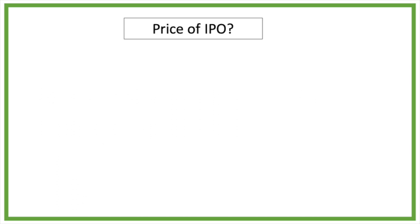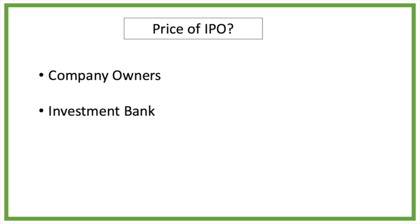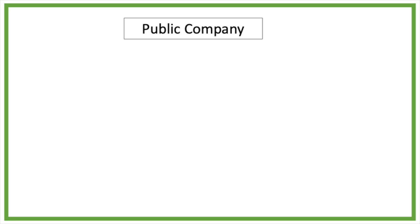When a company is going public, it's issuing stocks. The price and number of shares at which the public investors can buy the shares is determined by the current owners of the company and an investment bank who will issue the stocks. When going public, companies need to report to the public and its shareholders. Because of this, more strict regulations apply compared to private companies.